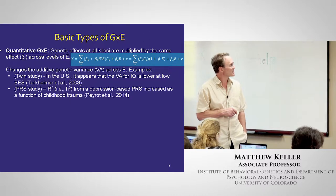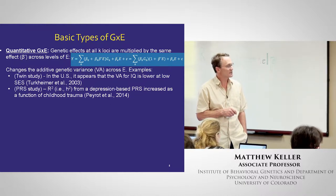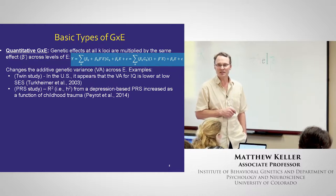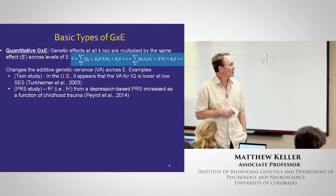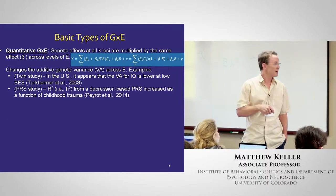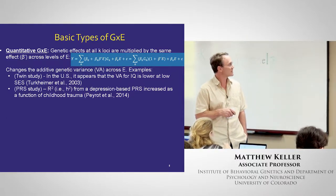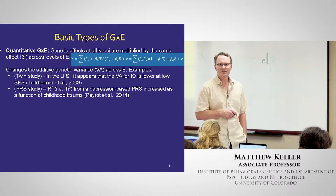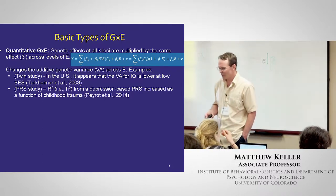Some examples: in twin studies it appears the additive genetic variance V_A for IQ is lower at low SES and increases as SES goes up — that's a quantitative G×E. In a PRS study, you might find that the R² or beta predicted by a depression-based PRS is higher as a function of childhood trauma — a finding by Pirooznia in the literature. Another example of a quantitative G×E.